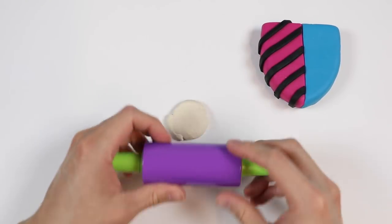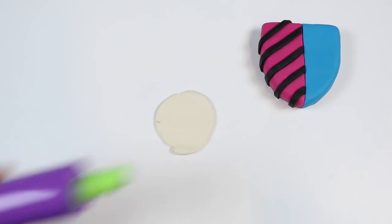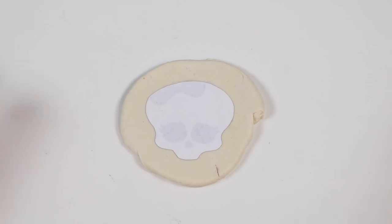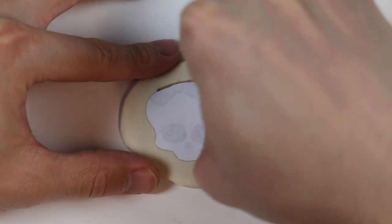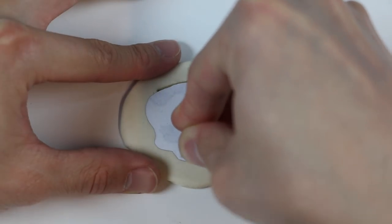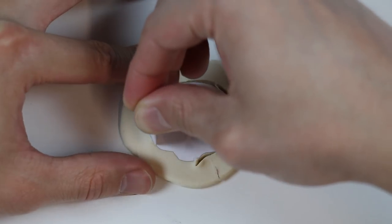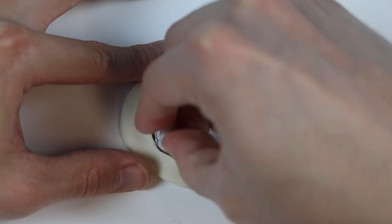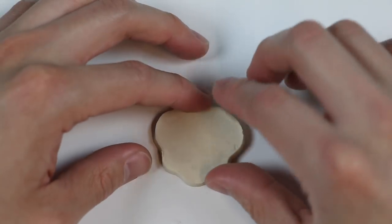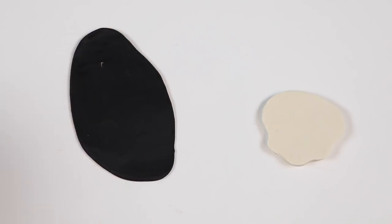Alright, next step, roll out some white Play-Doh. The logo has a ghoul's head, so we'll be making that now. Cut out the shape. Now that we got the ghoul's head shape, let's add some more details.